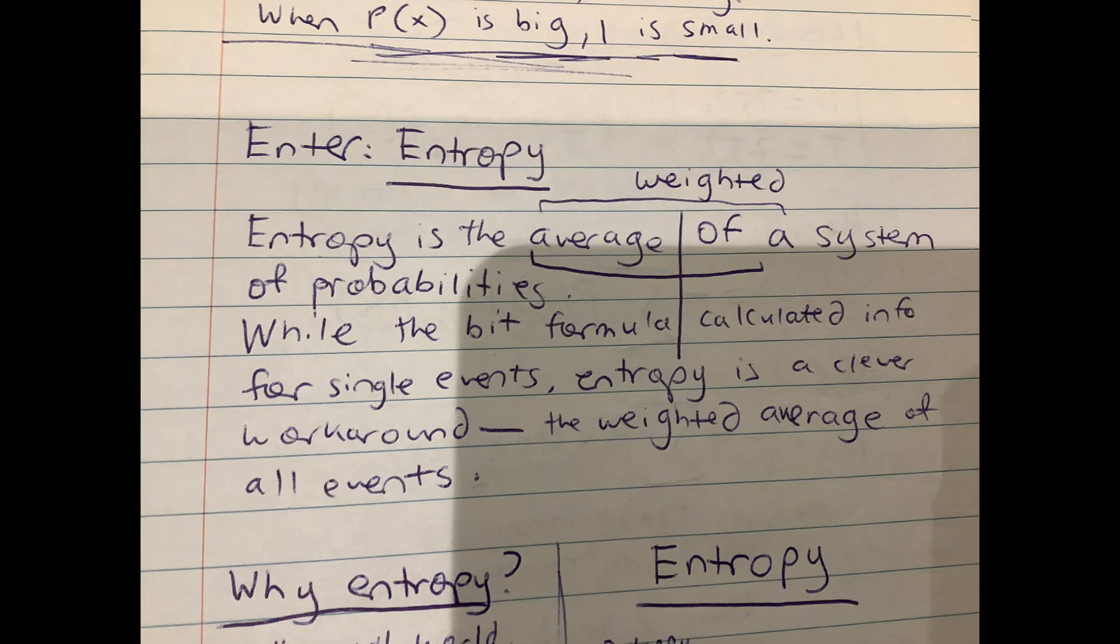That's when entropy comes in. Entropy is the weighted average of a system of probabilities. So while the bit formula was for a single event, entropy calculates the weighted average of all events.